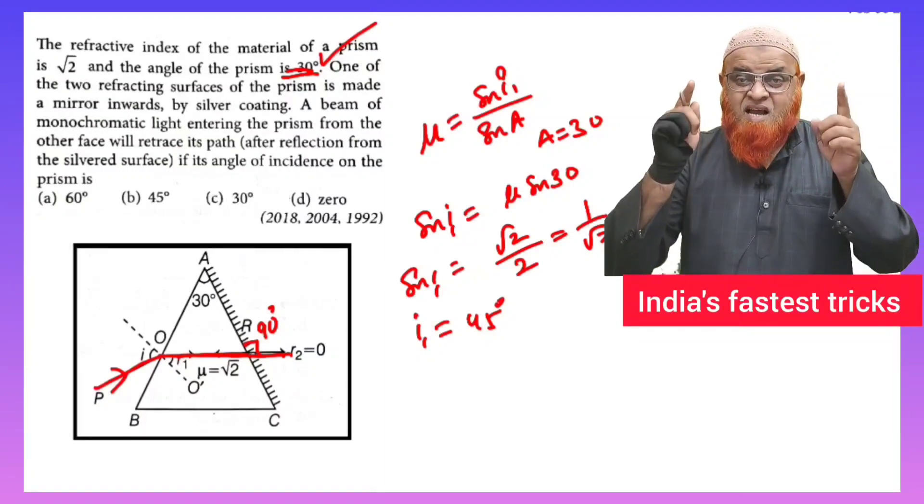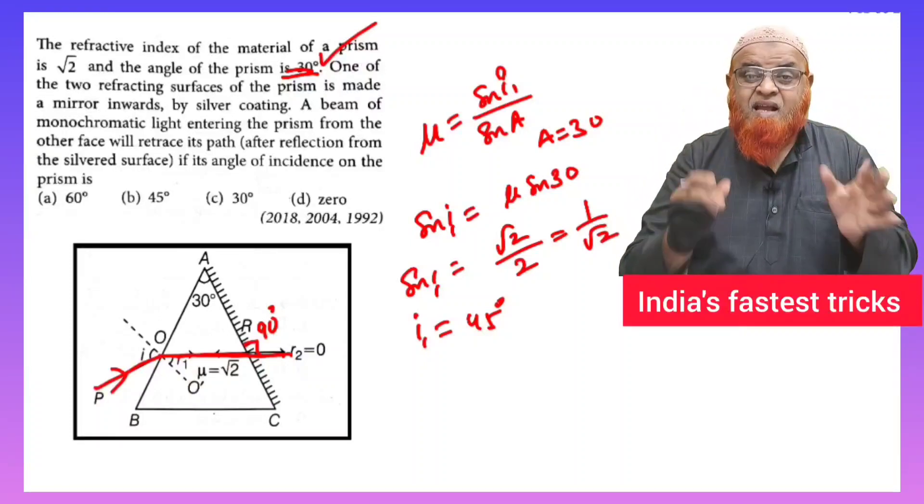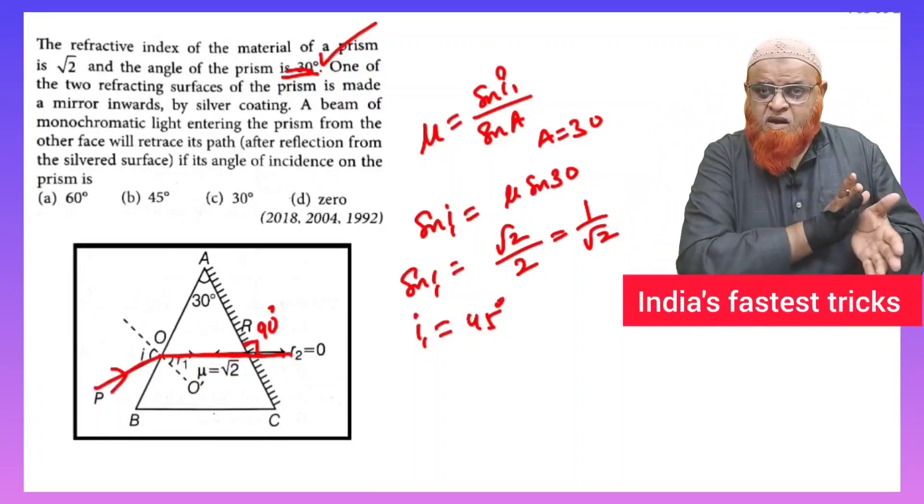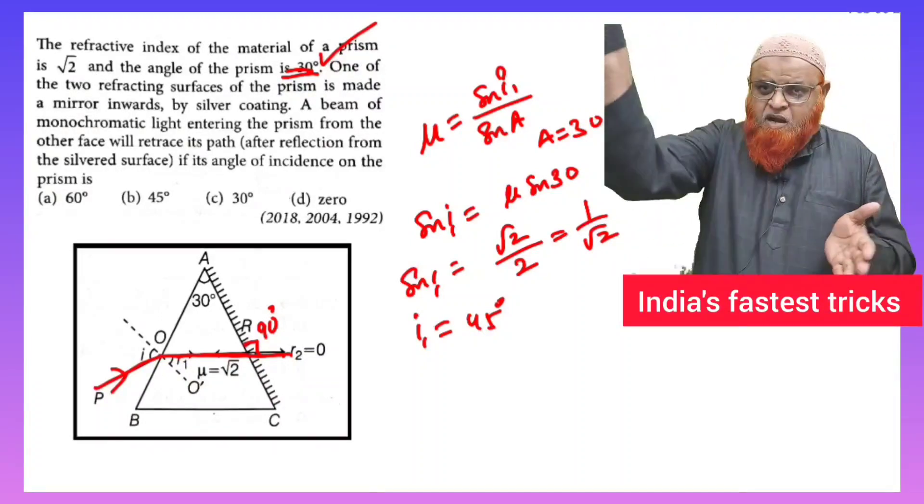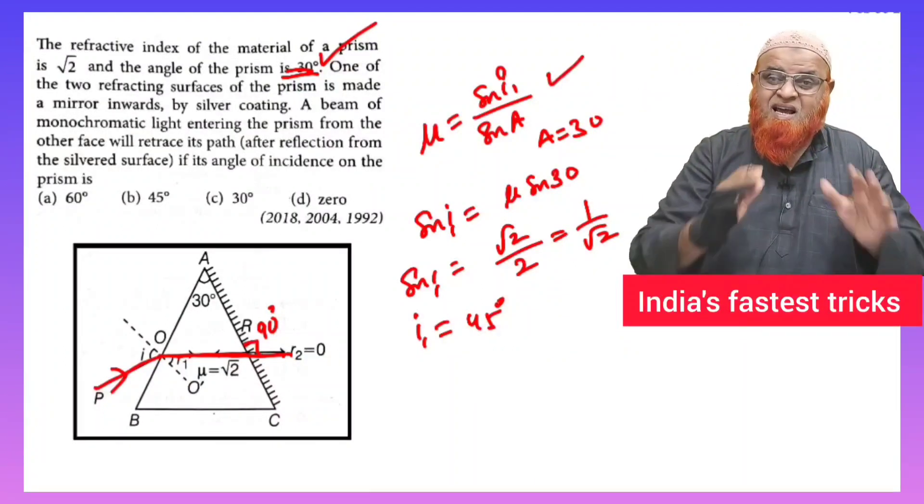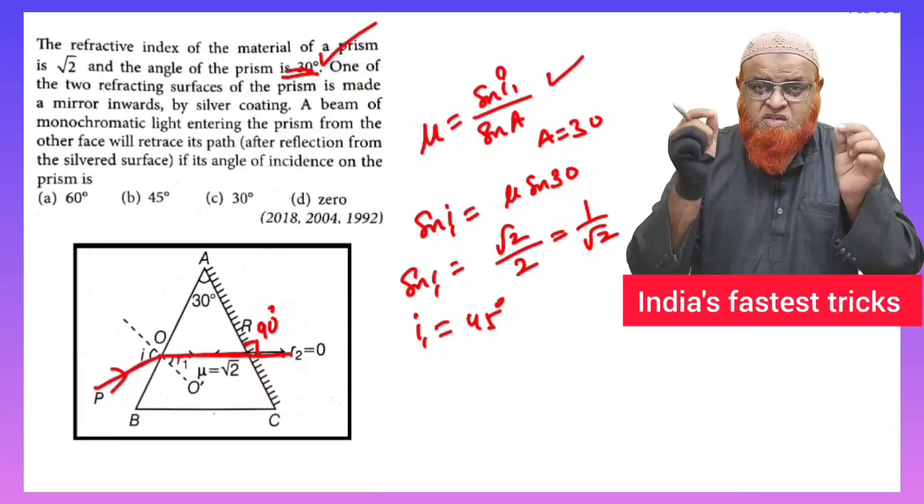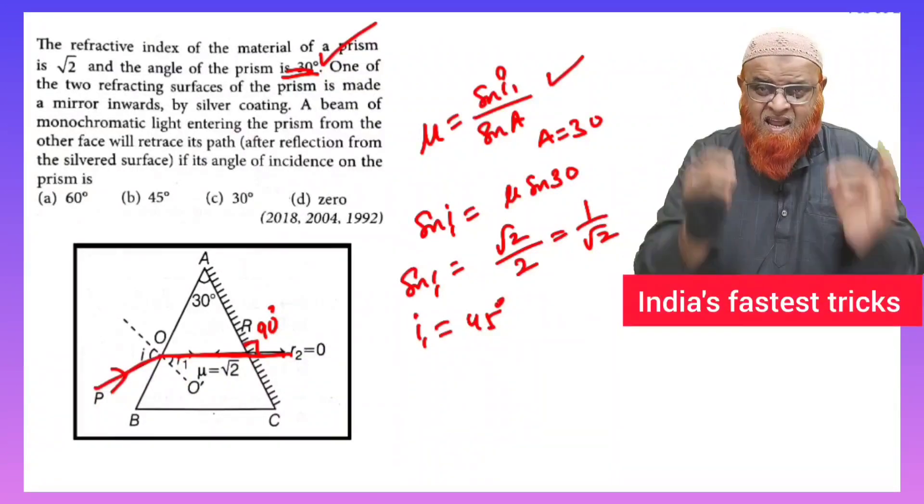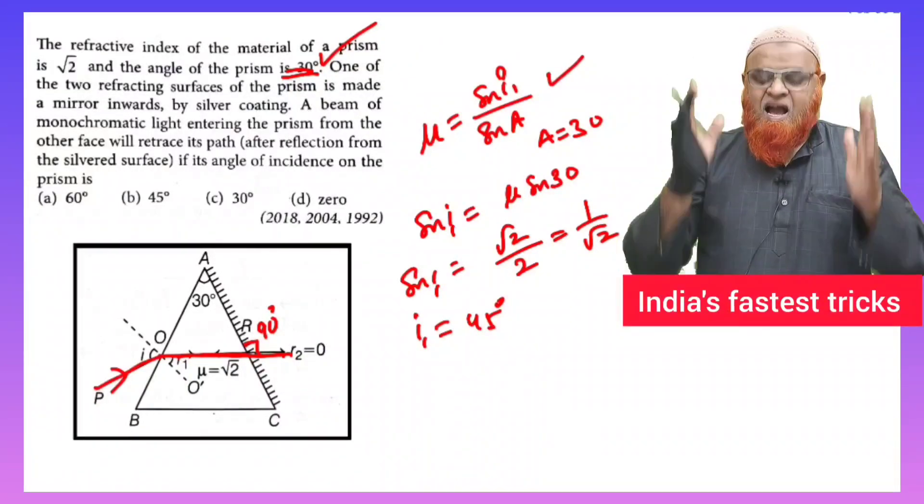So instead of writing μ is equal to sin A by sin r, you can directly take, in this case of prism, when light ray enters and perpendicularly it passes through the other side, at that time Snell's law you can directly change as μ is equal to sin i by sin A. Thank you very much, have a nice day.